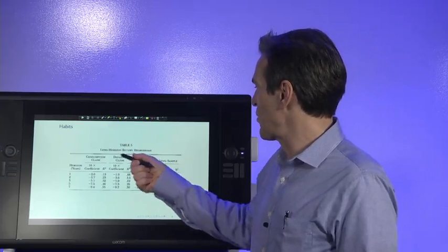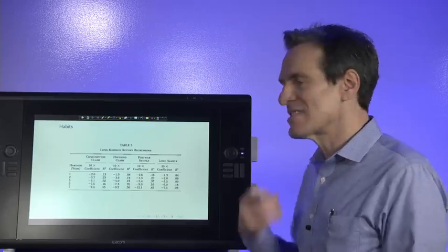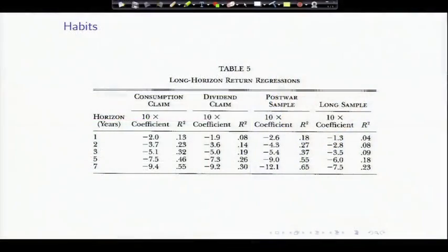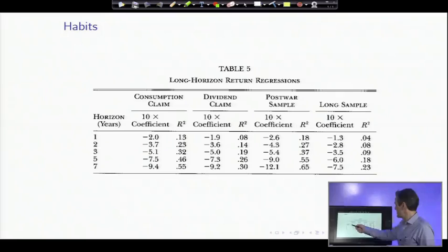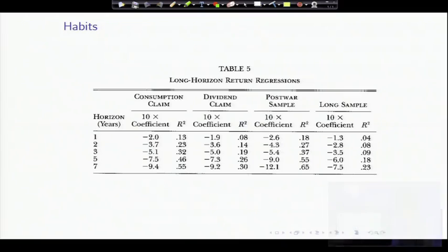Here is, for example, the long horizon return regressions. We saw those dividend yield regressions. This model generates those regressions. Here is, from the model, the regression of return on dividend yields at one, two, three, four, five, six, seven year horizon. You can see the coefficients rising with horizon, the R squared rising with horizon, as they do in the data. These are the coefficients and the R squareds in the data. So the synthetic data from this model replicates the same regression coefficients as you saw in the real data. And you saw why. In bad times, prices go down. In bad times, expected returns go up. So those regression coefficients are going to do what they do in the data.